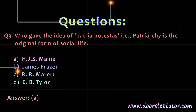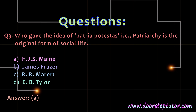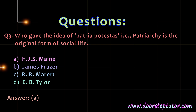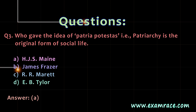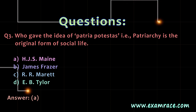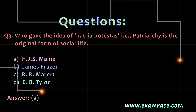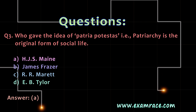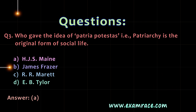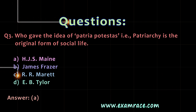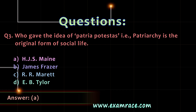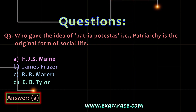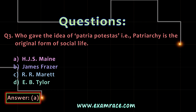The third question: who gave the idea of patria potestas, that is, that patriarchy is the original form of social life? A. H.J.S. Maine. B. James Fraser. C. R.R. Marriott. D. E.B. Taylor. The correct option is A, H.J.S. Maine.